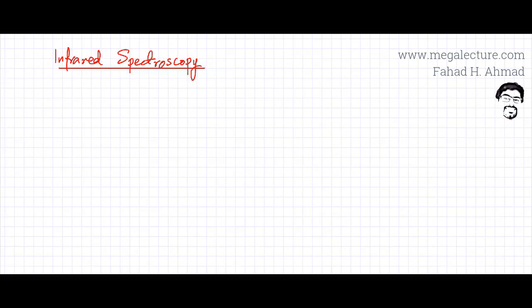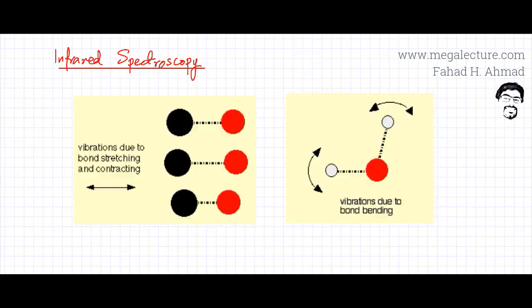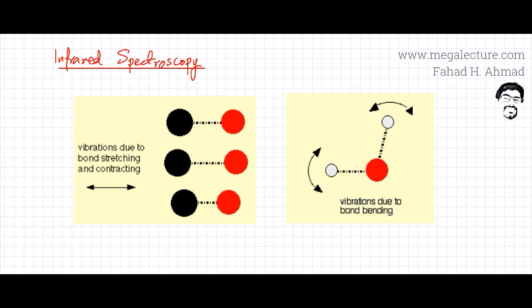In the following lecture, we're going to discuss infrared spectroscopy. To give you some background of what infrared spectroscopy is, remember that when you have bonds — every molecule has bonds — these bonds are not rigid. They're always vibrating due to bond stretching and contraction.